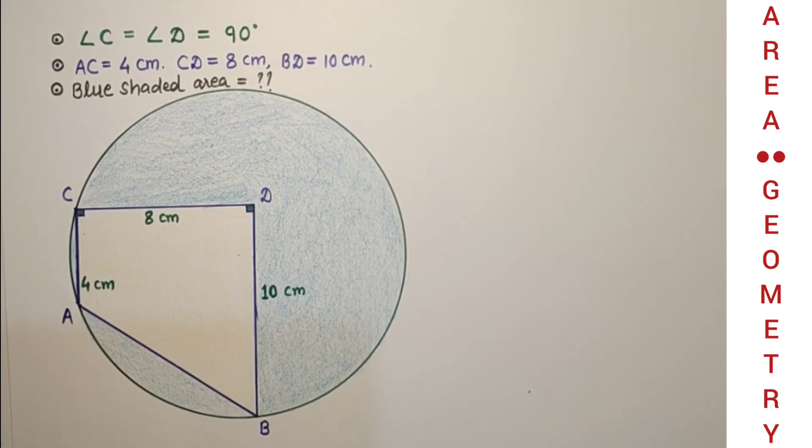It's an average question, 10th grade question. To get the area of the shaded portion, first we need the radius of the circle and we don't have center of the circle.